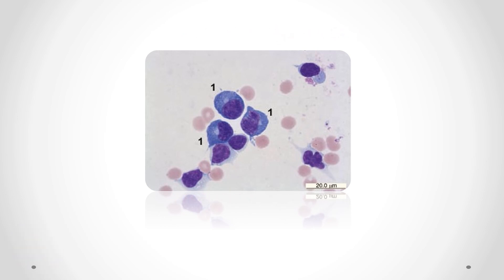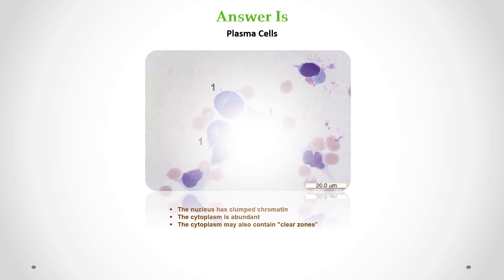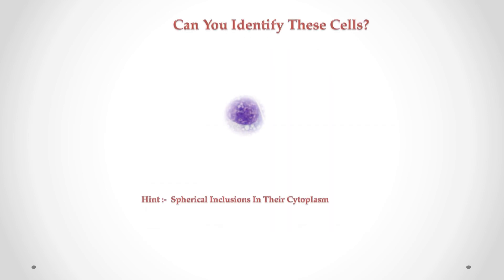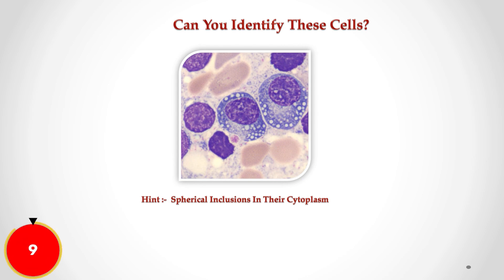Correct answer is plasma cells. We can see the nucleus has clumped chromatin, the cytoplasm is abundant, and the cytoplasm may also contain clear zones. Can you identify these cells in CSF?